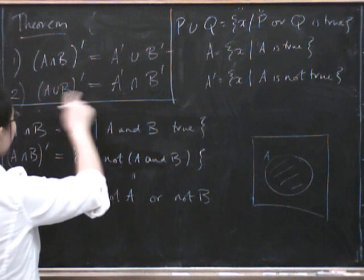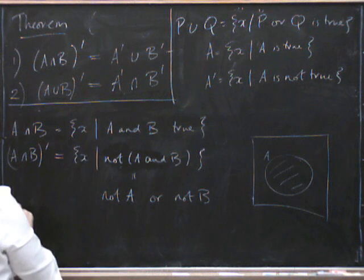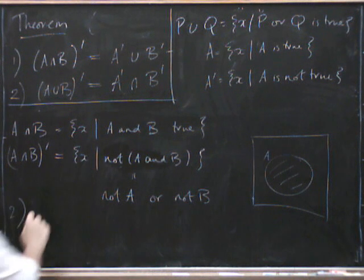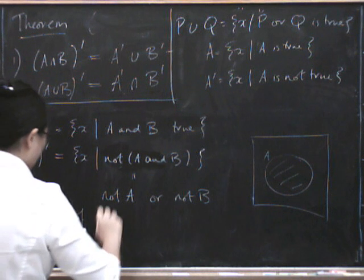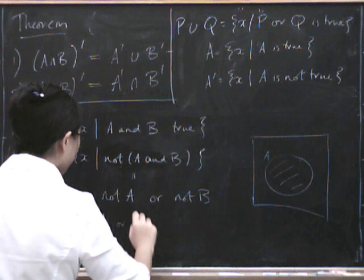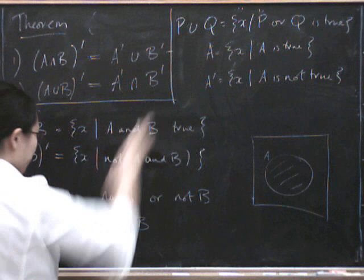And the other one here is telling us this is A or B. So the second one is telling us that the negation of A or B is this, which is NOT A AND NOT B.